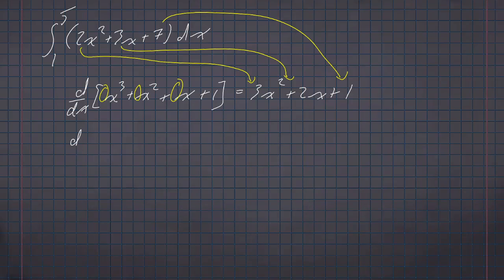So what do we need? Well, taking the derivative of x³ is going to multiply the coefficient by three. What do we multiply by three to get two? Two thirds. What do we multiply by two to get three? Three halves. What do we multiply by one to get seven? Seven.